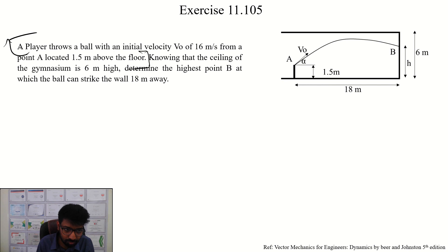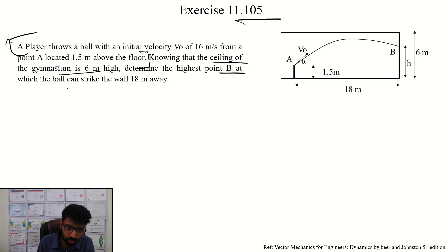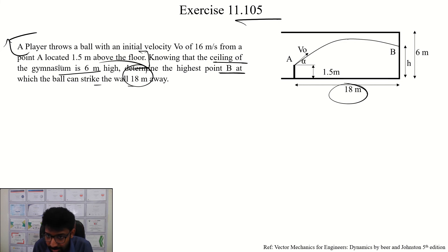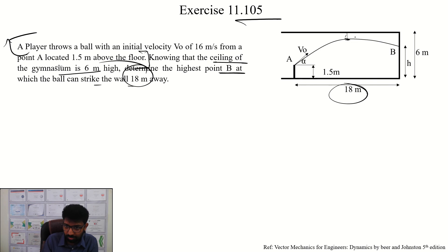Now we are going to consider the ceiling problem. The ceiling dimension is 6 meters. The highest point B is under the ceiling, to which the ball can strike, at 18 meters. The highest point B is the only point in mind; the highest point B is always where we just touch it from the starting position. We have maximum point B.